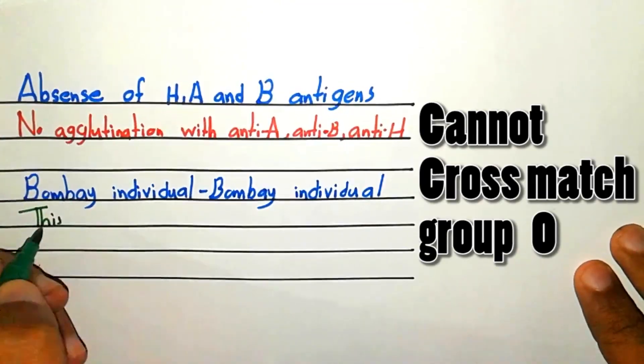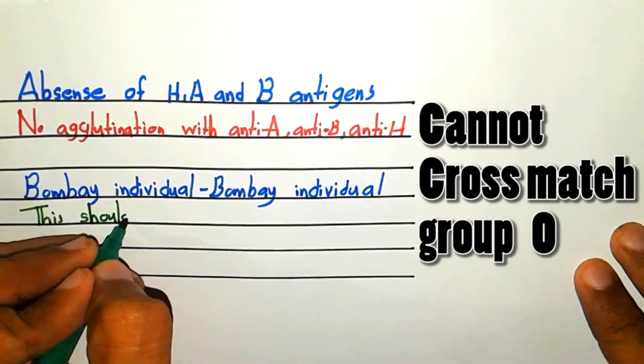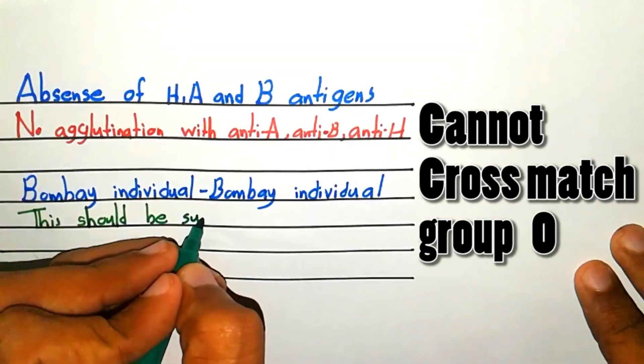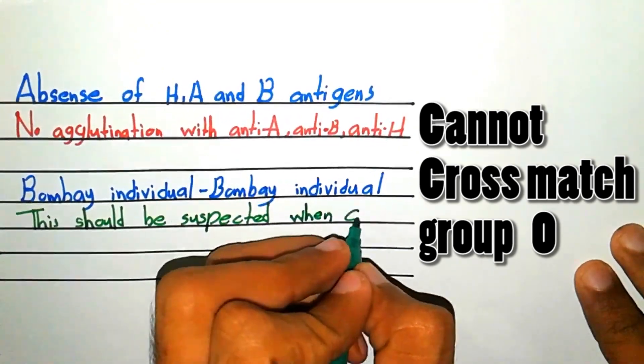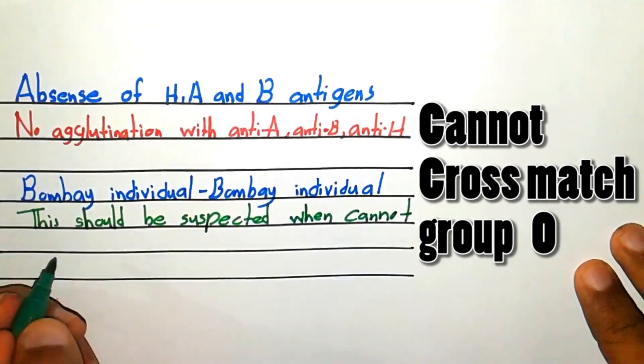This should be suspected when you cannot cross-match group O blood for a group O operation.